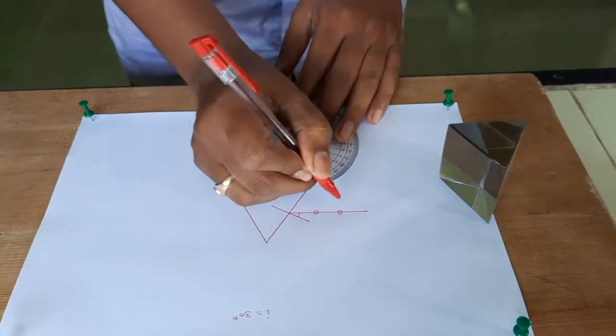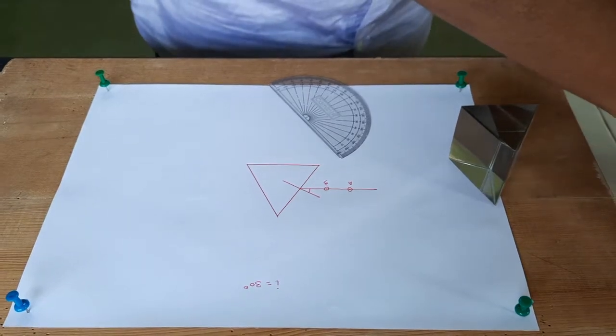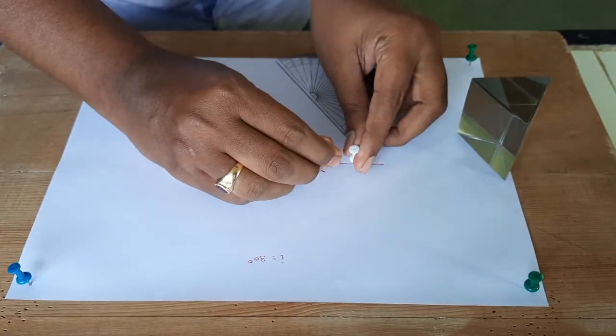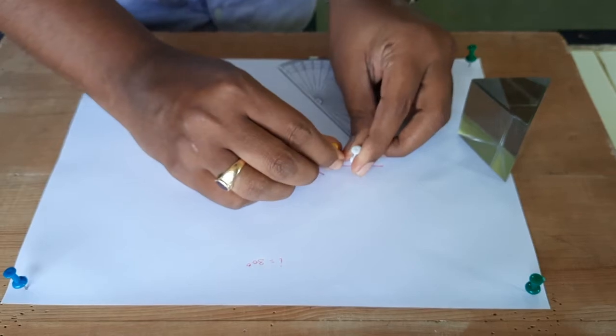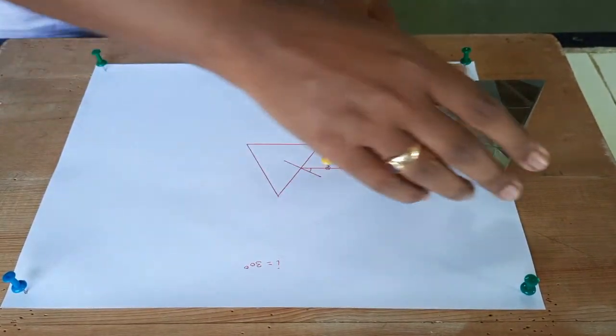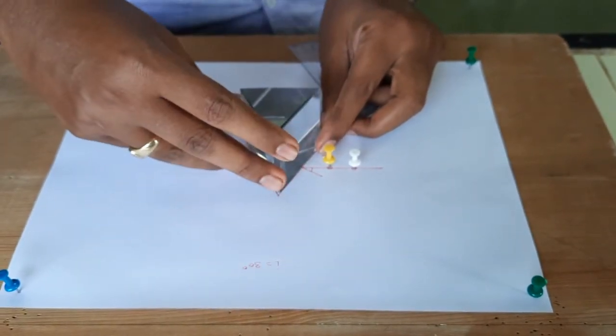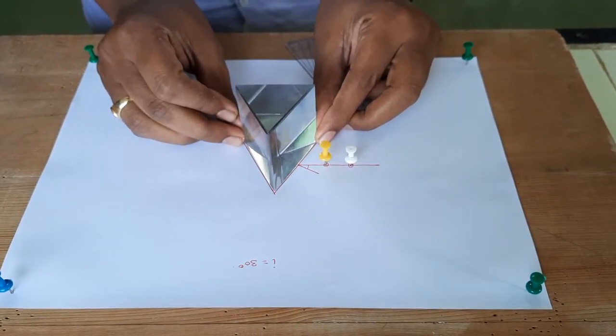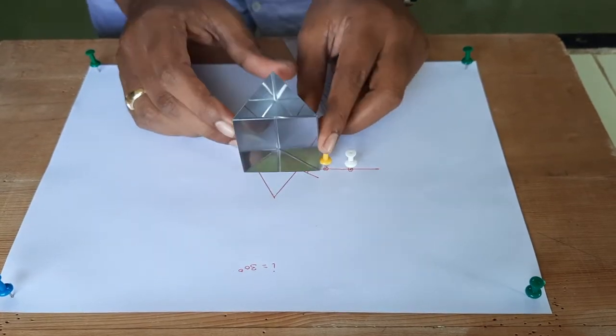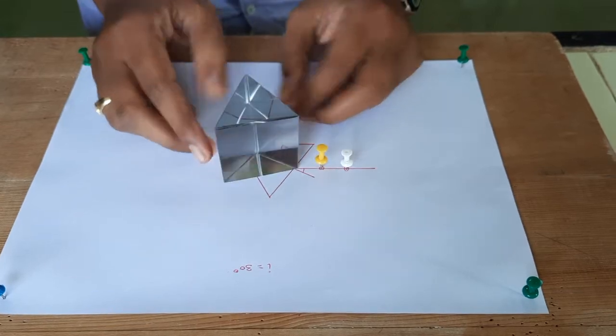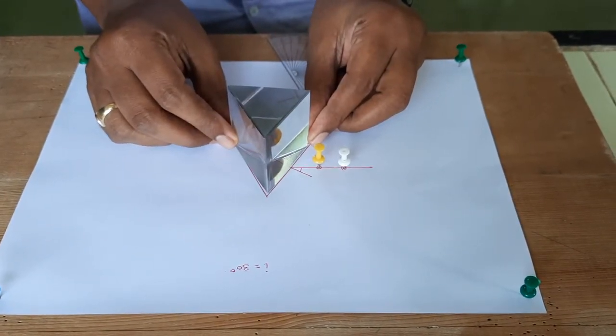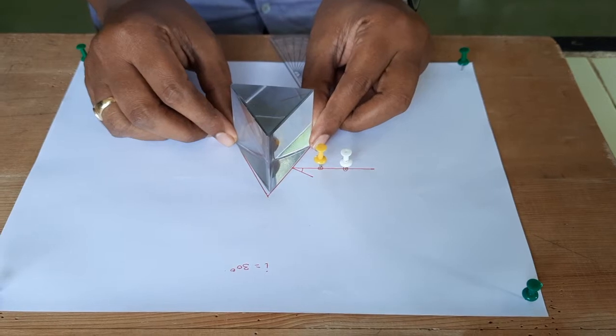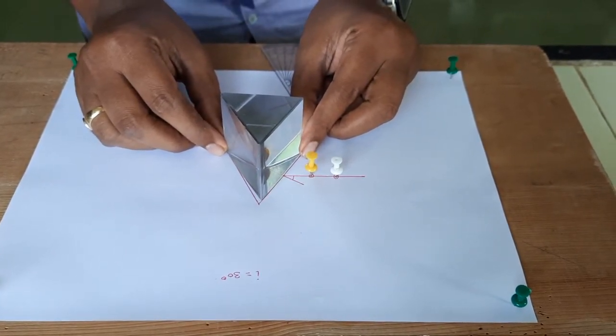Select two points, point A point B, and then just like earlier you have to press two pins such that they are collinear. Make sure that they are aligned properly. Now keep the prism. Make sure that it is just placed on the triangle. Now always remember that the manufactured product is not perfect, it is not accurate. So you have to make certain adjustments over here.